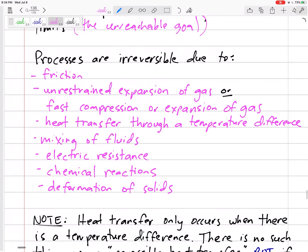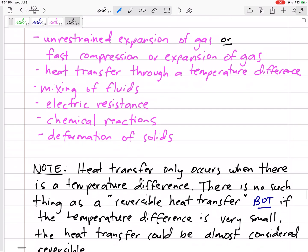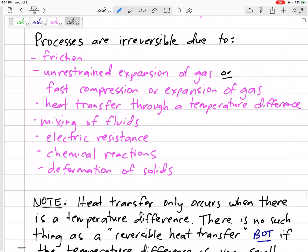We're not going to have reversible processes in nature or in real life because of friction, because of unrestrained expansion of gases or fast compression or expansion of gases, heat transfer through temperature differences. All of these make processes irreversible: mixing of fluids, electric resistance, chemical reactions, deformations of solids.